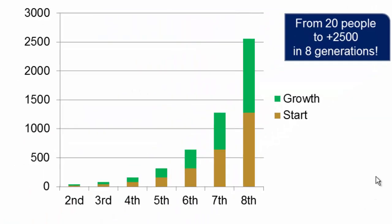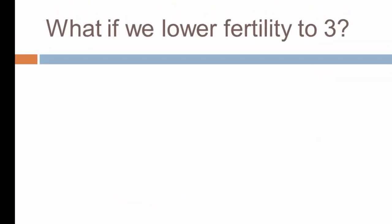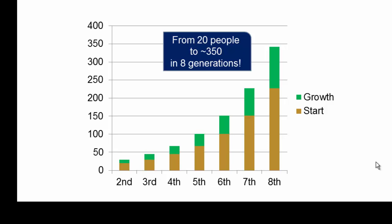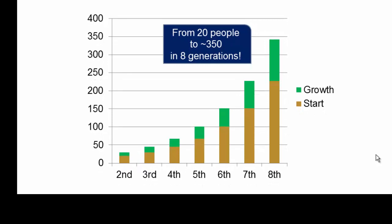That's roughly two centuries. So imagine starting with 20 million people — we're going from 20 million people to two and a half billion in just 200 years, with a fertility rate of four. That's just amazing. If we push the fertility rate down to three, that does slow things down. Over those eight generations we go from 20 people to roughly 350 — or from 8 million to 350 million in 200 years — which is actually quite similar to the population growth of the United States over the last two centuries.